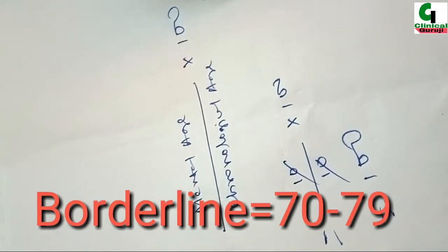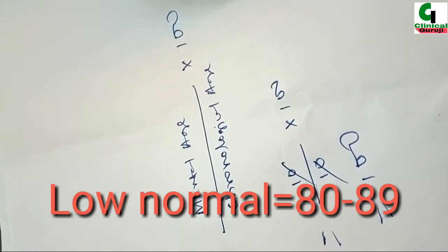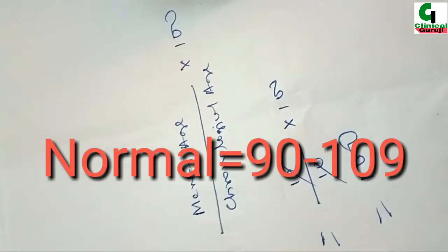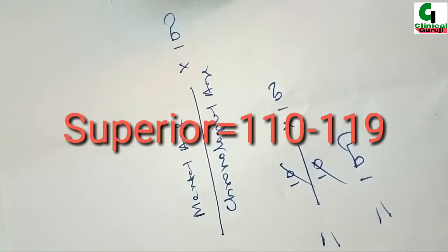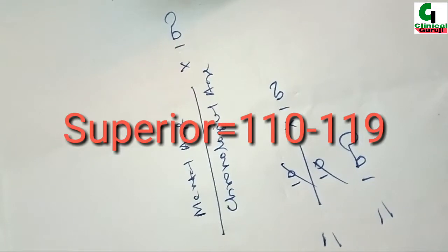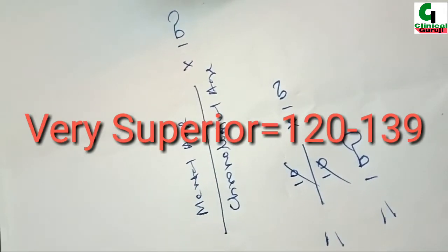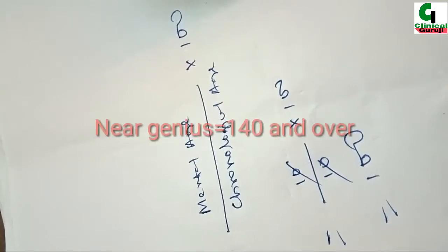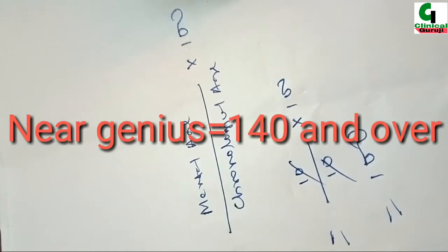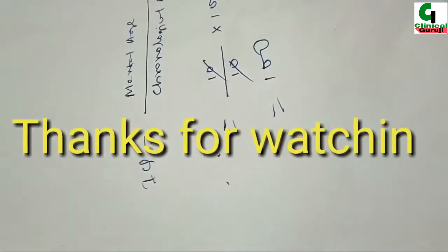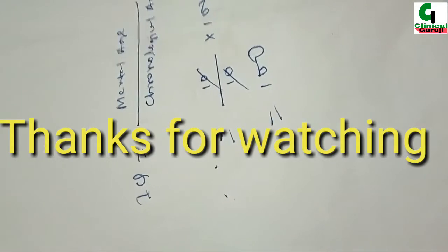Low normal 80 to 89. Normal 90 to 109. Superior 110 to 119. Very superior 120 to 139. Near genius 140 and over. So this is all about IQ. Hope this video will help you friends.